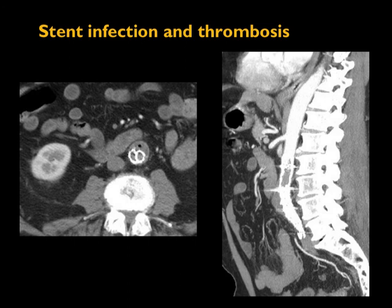That really sums up our tour of endovascular repair of aneurysms. We talked about both the normal appearance and complications — in particular endoleaks — and then various less common complications such as fracture, infection, and branch vessel occlusion. In the next part, we're going to talk about open repair and its appearance. Thank you for your attention.